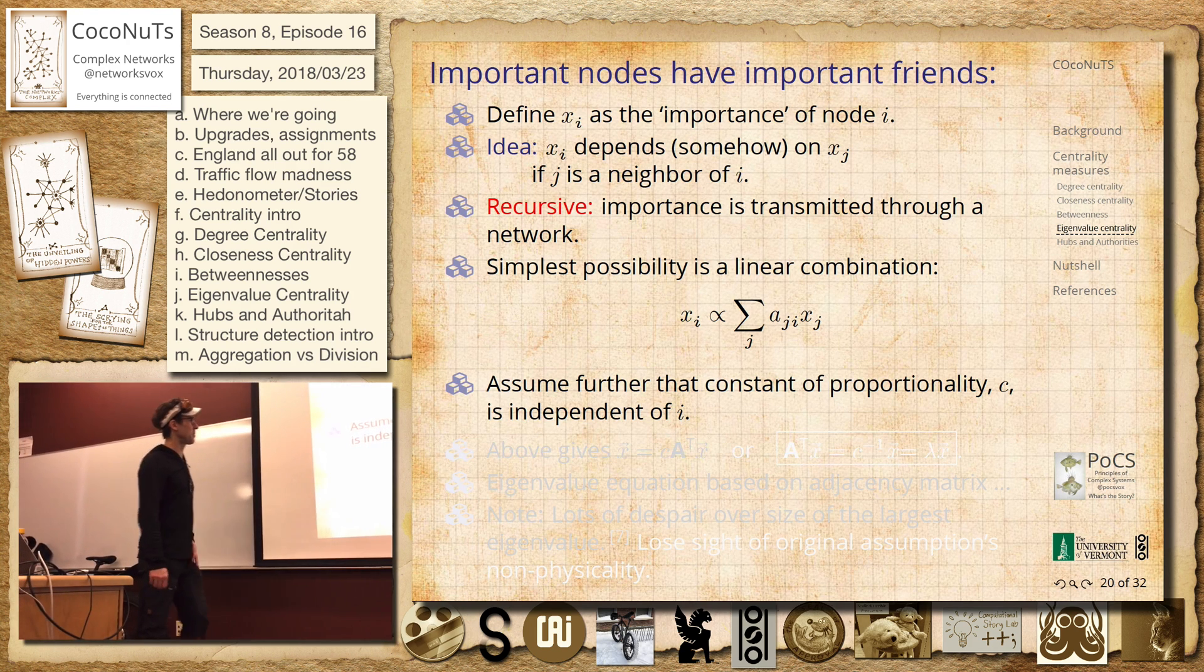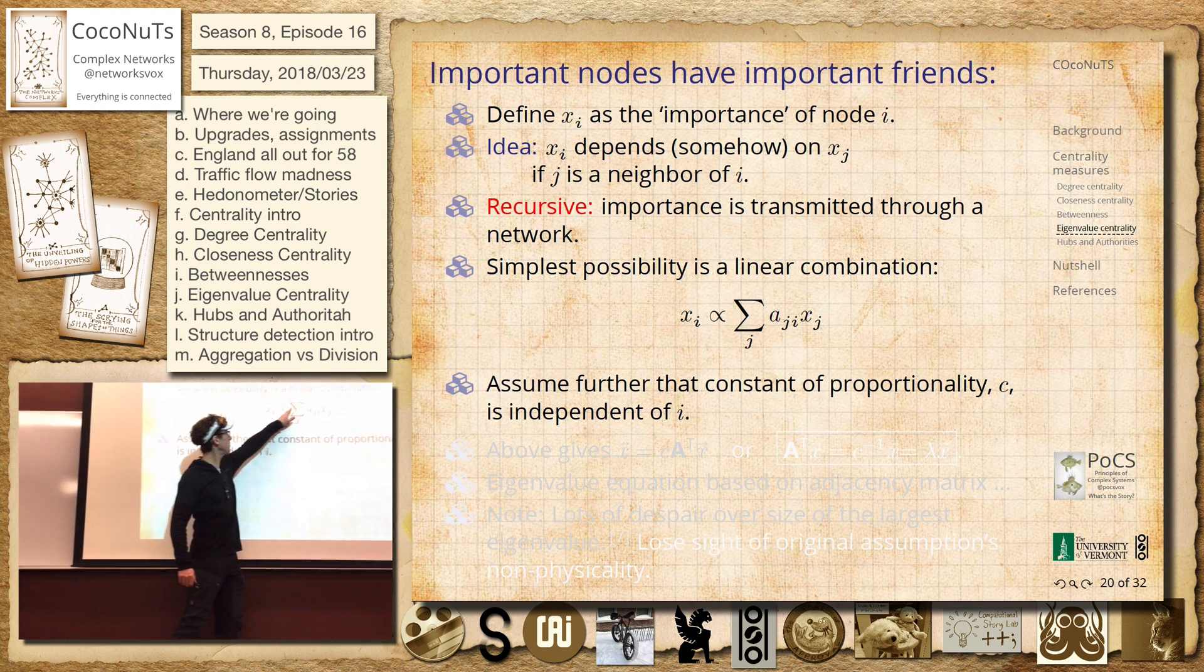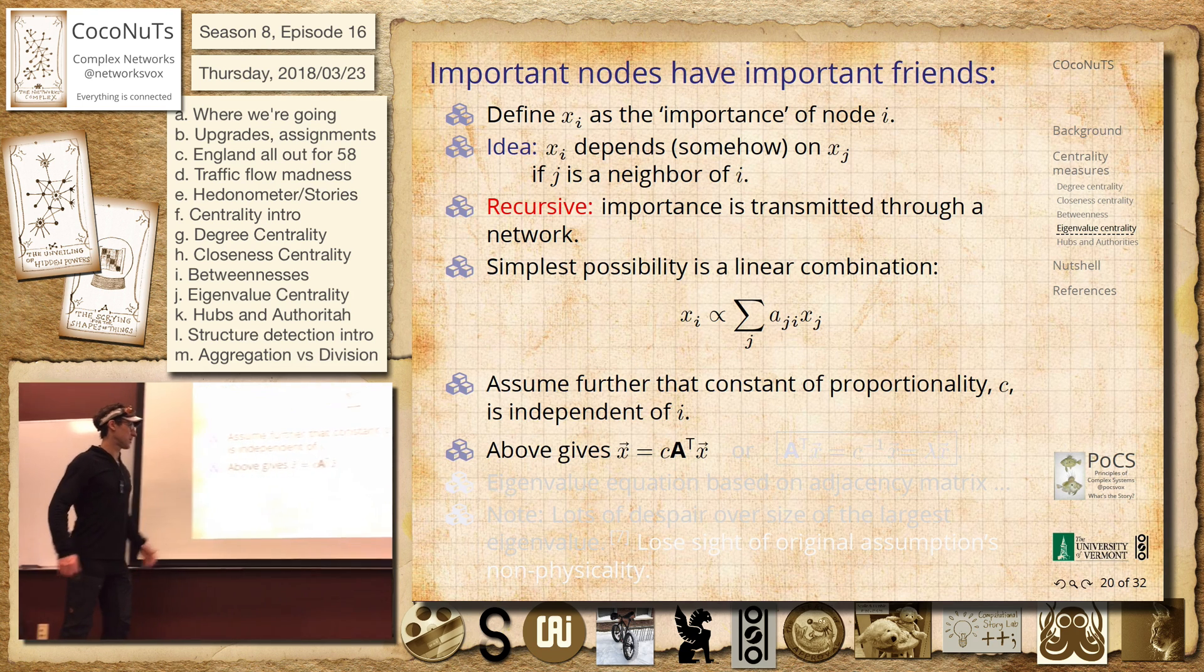We could say that this constant proportionality, this is absolutely how it's done. And this constant proportionality that you might end up with here is independent of node i. So then we have this.